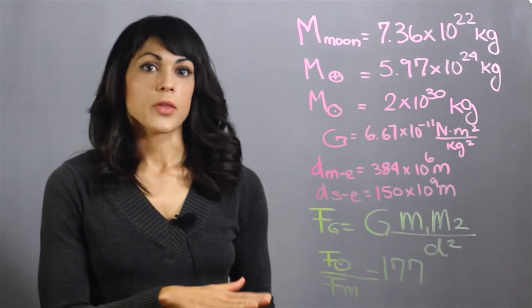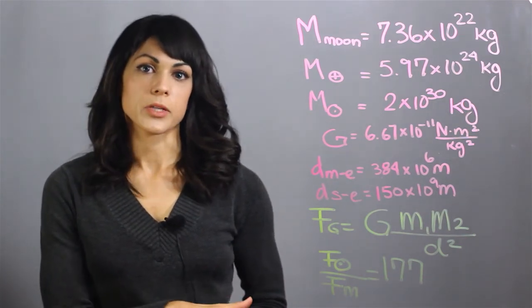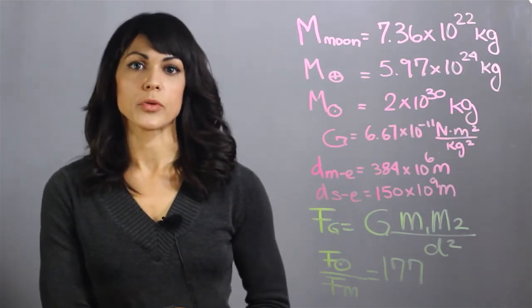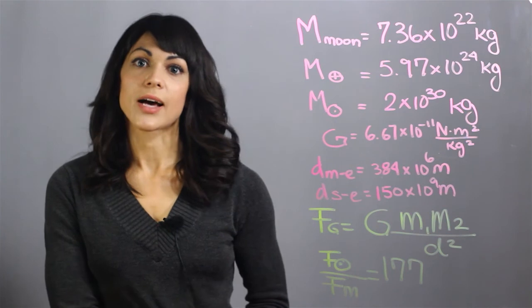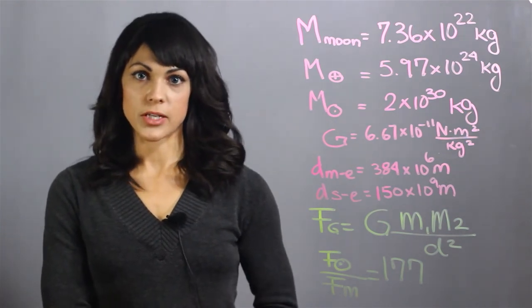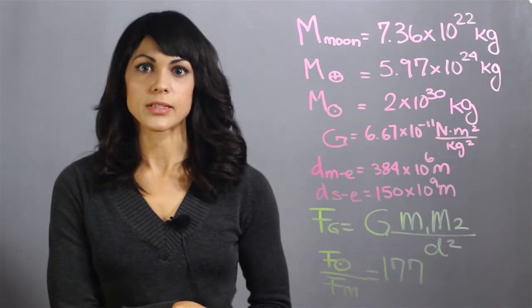Therefore, we know that the gravitational pull of the sun has to be greater than the gravitational pull of the moon. A common misconception is the gravitational pull of the moon is higher because of the tides. But actually, the tidal forces depend on the gradient of the gravitational field, not the gravitational field itself.